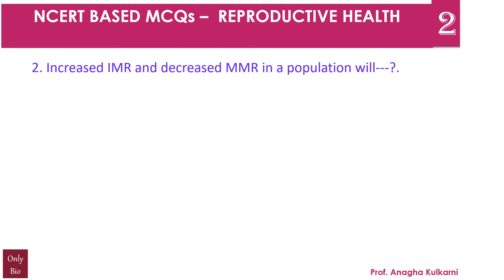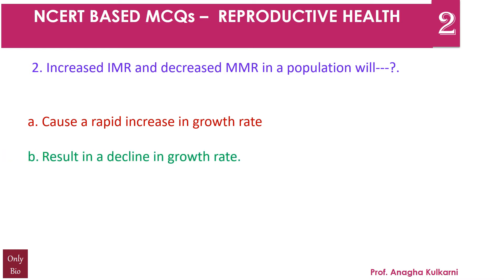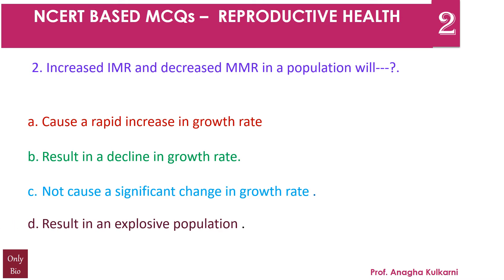Question number 2: Increased IMR and decreased MMR in the population will — A. cause a rapid increase in the growth rate, B. result in a decline in the growth rate, C. not cause a significant change in the growth rate, D. result in an explosive population. The correct answer is C — it won't cause a significant change in the growth rate.